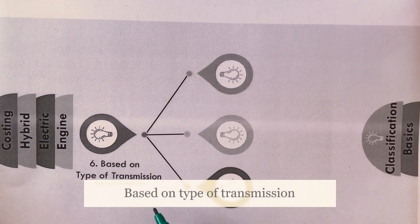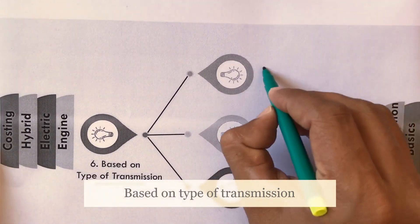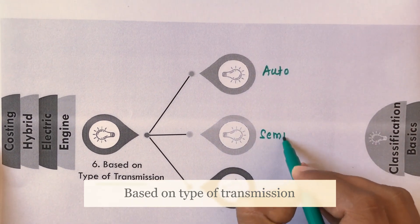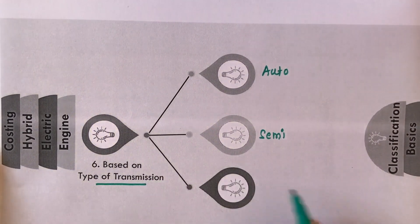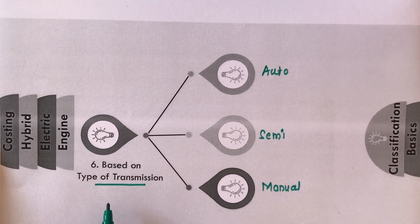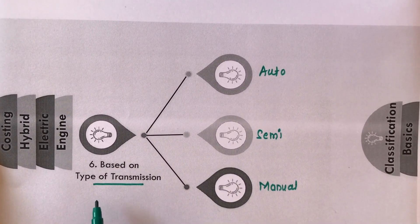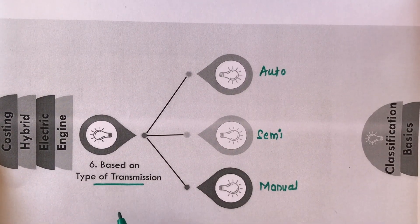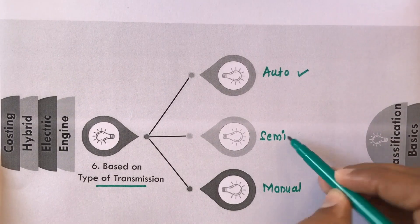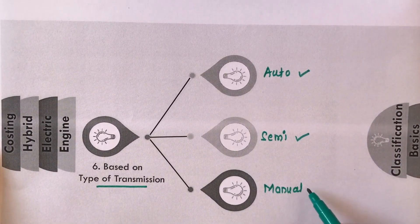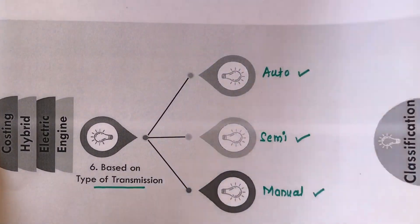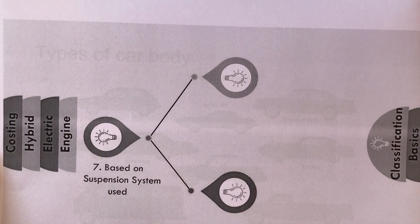The next basis of classification is based on the type of transmission. That may be automatic transmission, semi-automatic transmission, or manual transmission. Depending on the transmission system used, vehicles are classified as automatic transmission vehicles, semi-automatic transmission vehicles, or manual transmission vehicles.